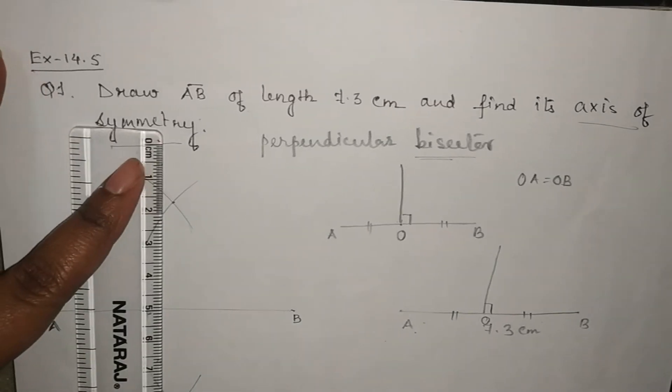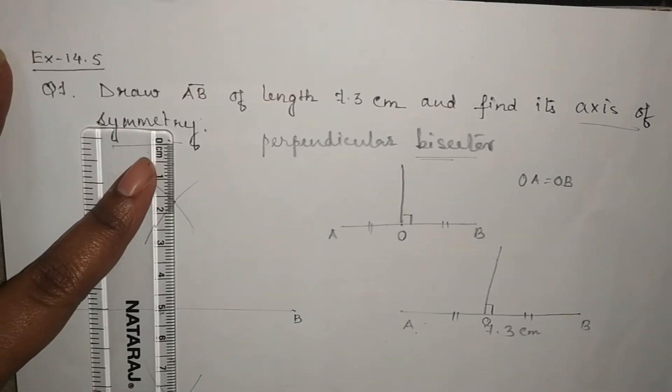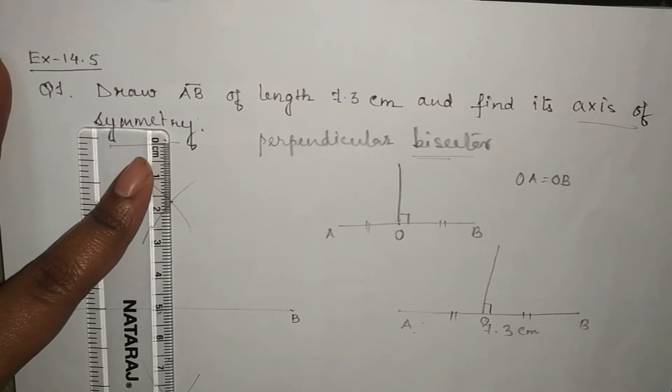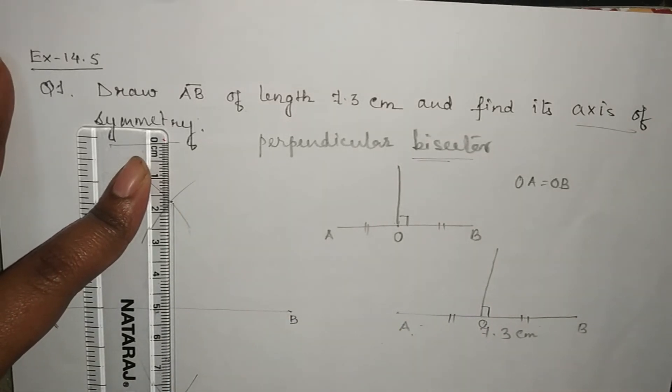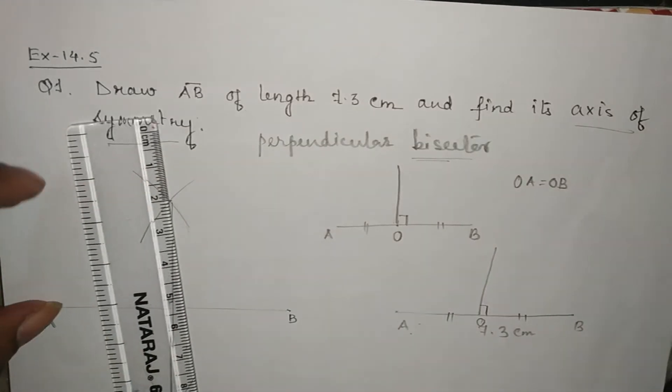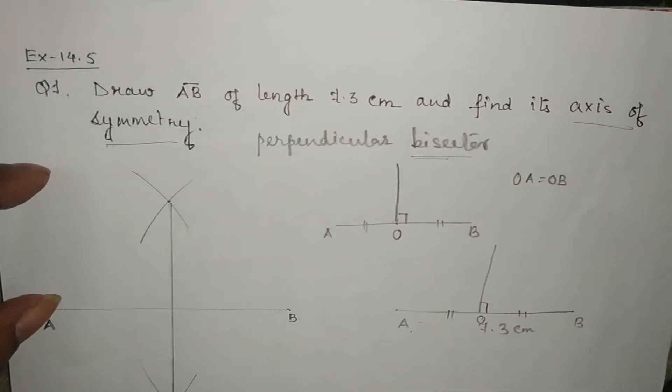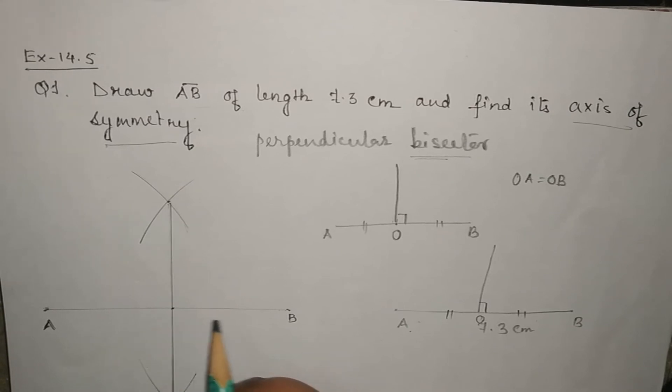Now we will join these two. This will intersect AB line segment at point O.